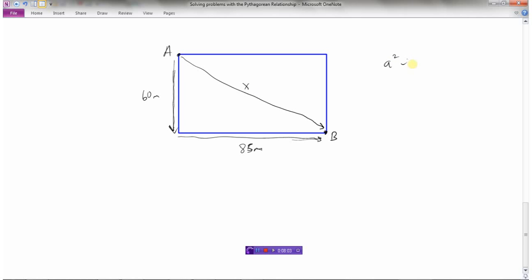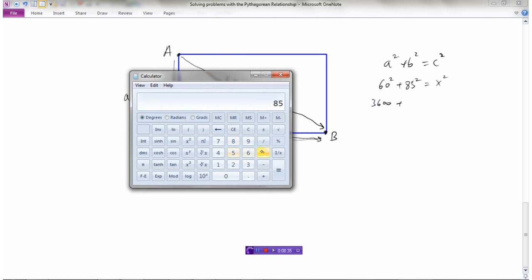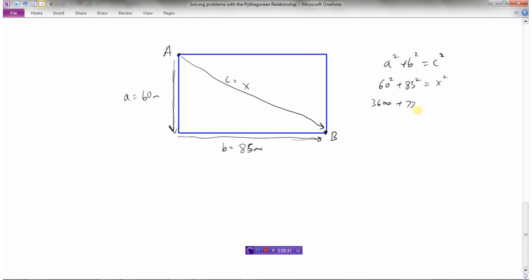So start by writing down Pythagoras' theorem. A squared plus B squared equals C squared. So I'm going to call this A, this B, and the hypotenuse must be C. So 60 squared plus 85 squared equals X squared. So 60 times 60, that's 3,600, plus 85 times 85, which I'm going to get some help with. 85 times 85, 7,225 equals X squared.